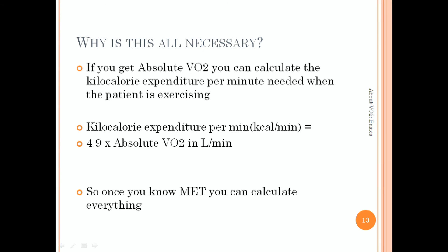You may wonder why is all this necessary. If you get the absolute VO2, you can calculate the kilocalorie expenditure per minute needed when the patient is exercising. The kilocalorie expenditure per minute is equal to 4.9 multiplied by the absolute VO2 in liters per minute. 4.9 is the conversion factor, but make sure you enter the value of absolute VO2 in liters per minute. So once you know the MET value, you can easily calculate all the values of relative and absolute VO2 and the kcal per minute.